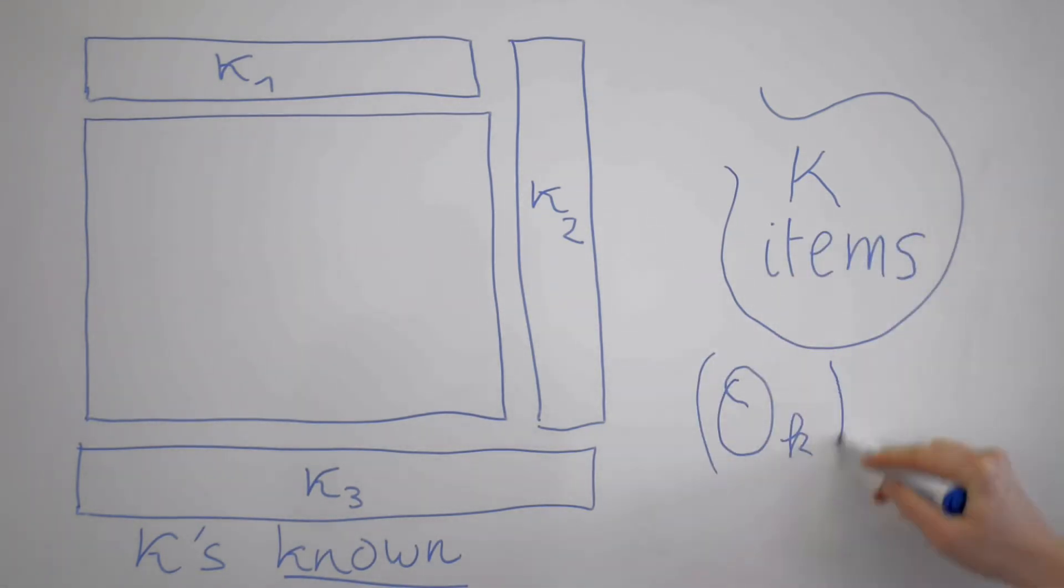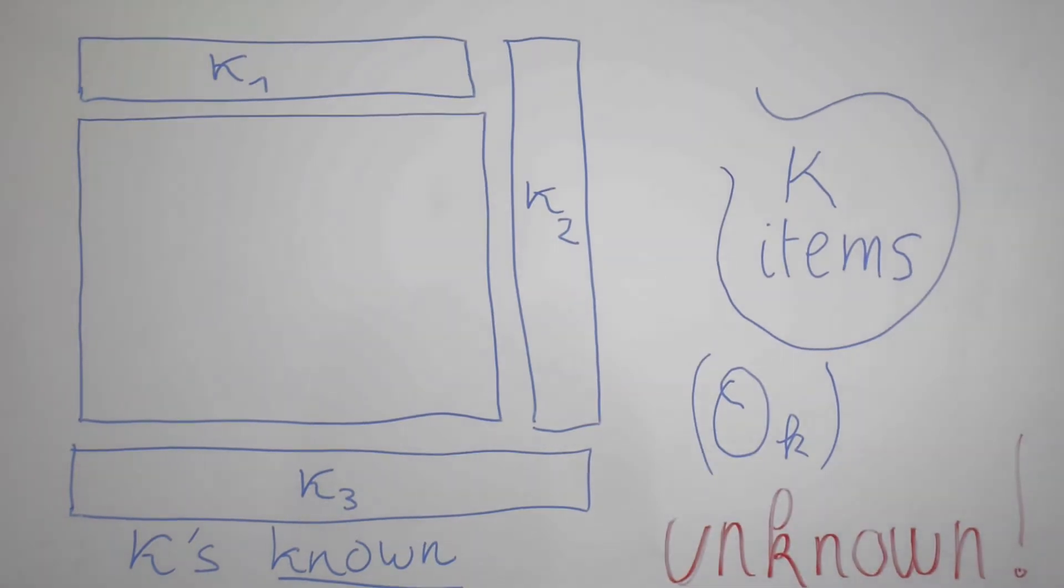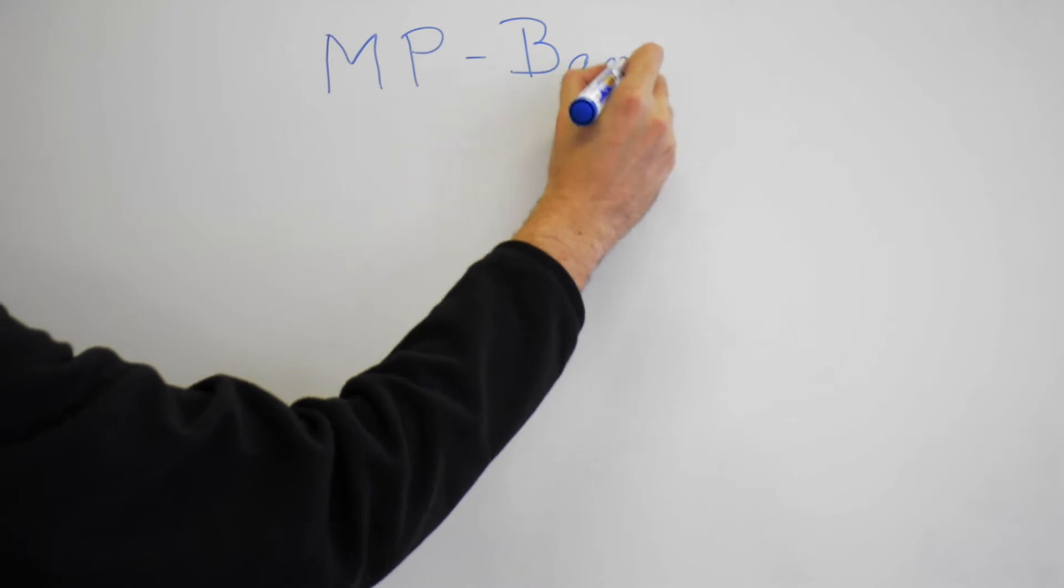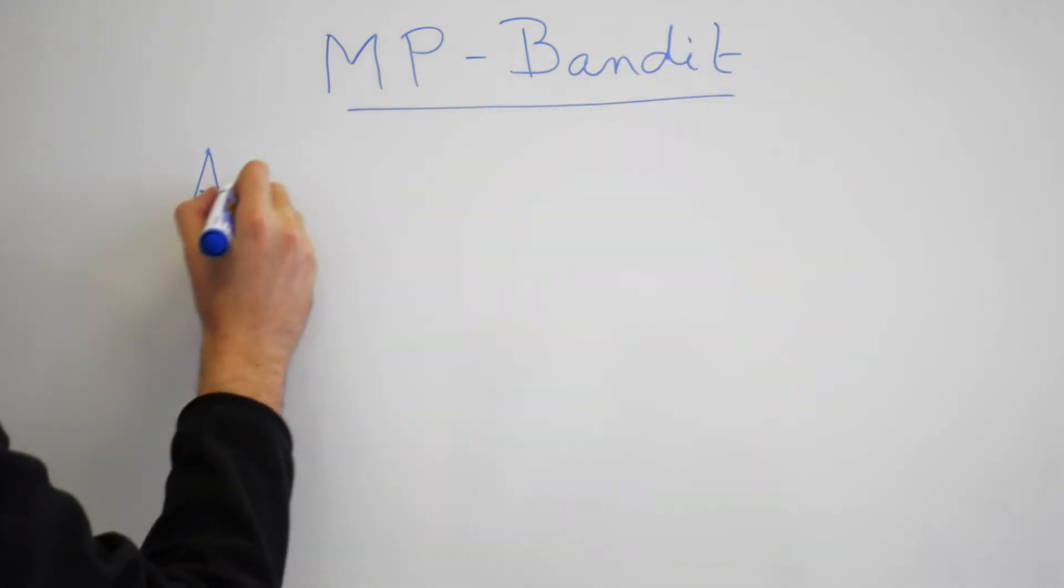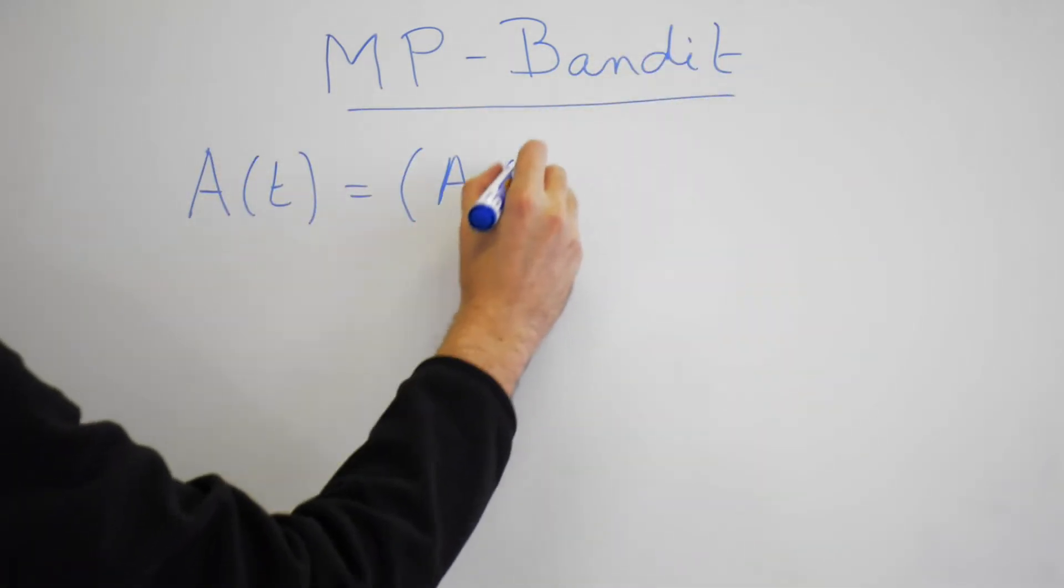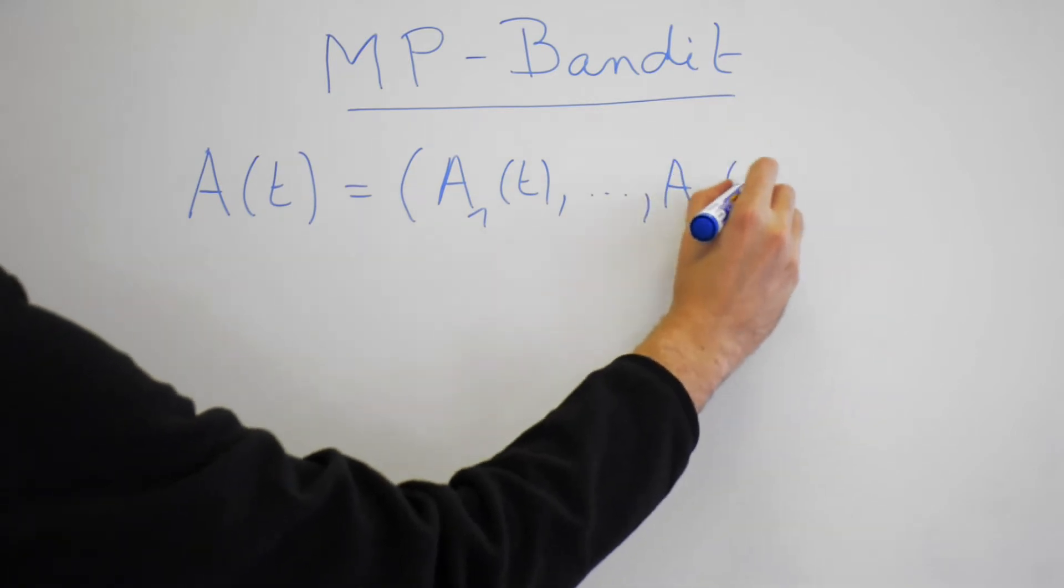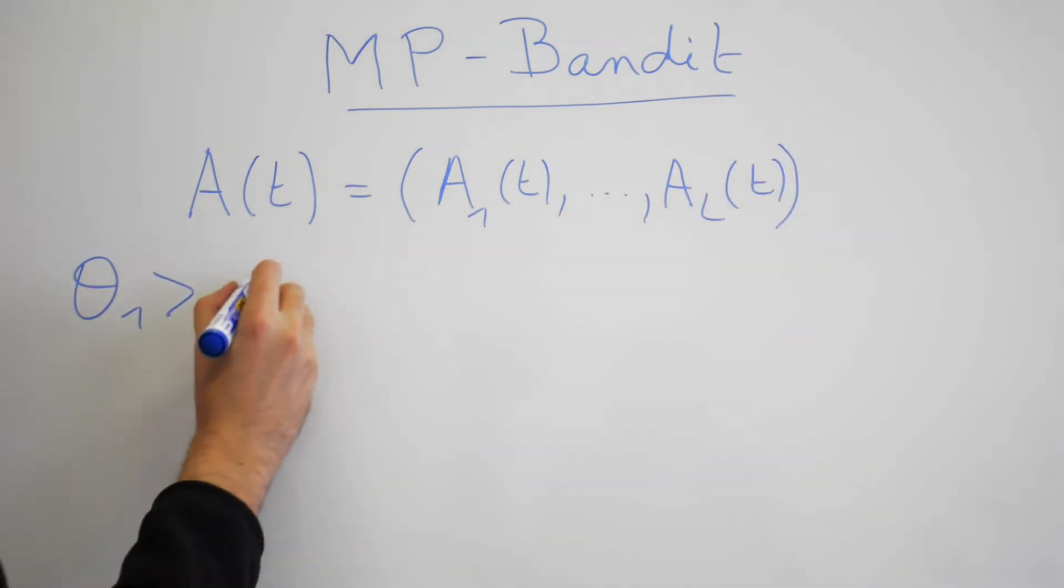At each round T, the algorithm selects an action A of L items. This corresponds to the different ads to be displayed in the different locations as seen previously.